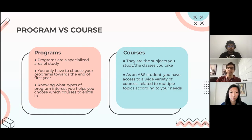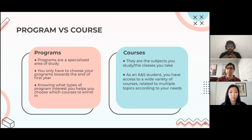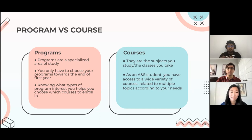So what are programs? Programs are specialized areas of study that you will be taking. You will only have to choose your program towards the end of your first year, but knowing what types of programs you might be interested in may help you choose which courses you want to enroll in. Now what are courses? These are the subjects that you actually take — like history or sciences from high school, but typically a little bit more specialized when you come to university.